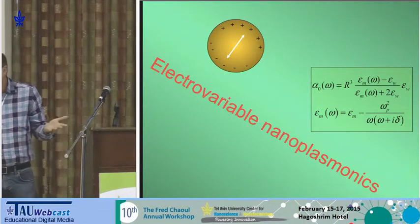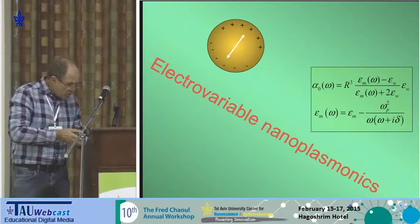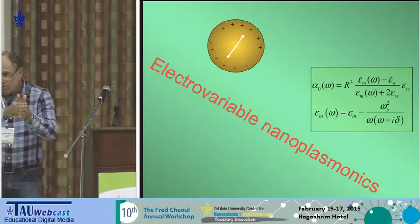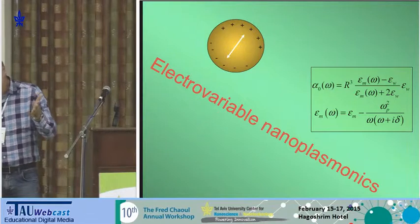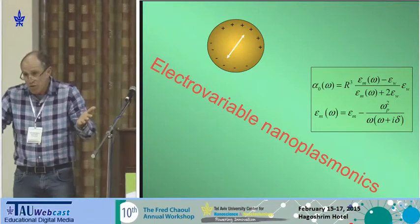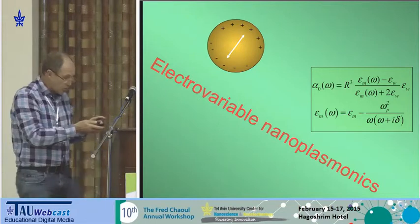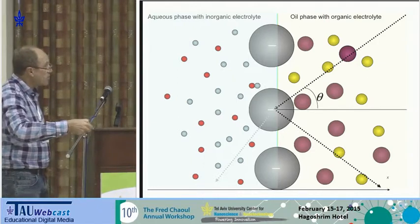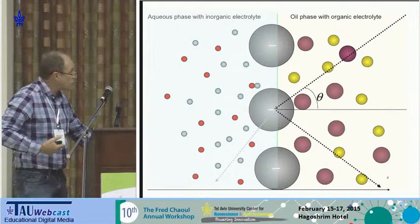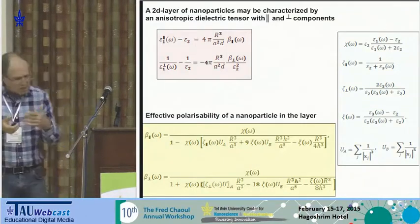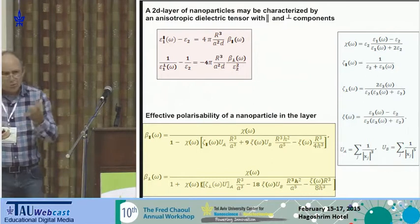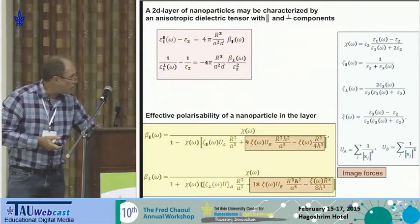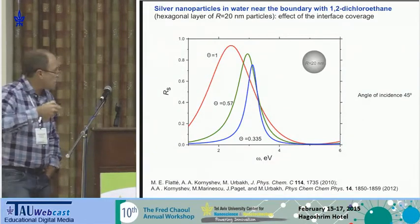Why do we think optical properties are interesting? Our idea was that by applying and changing electric field, we can bring particles to the surface and take them out, giving us an electrotunable optical device. Our particles sit at the interface, and we look at reflection of light from this interface. We started from a very simple model that takes into account only dipole contributions of these nanoparticles, and calculated reflection.